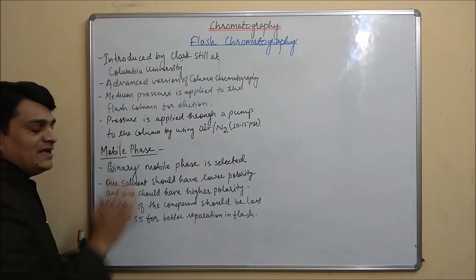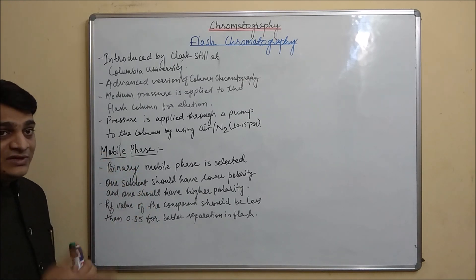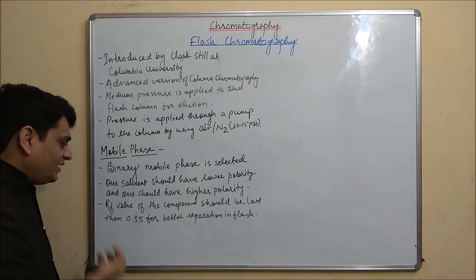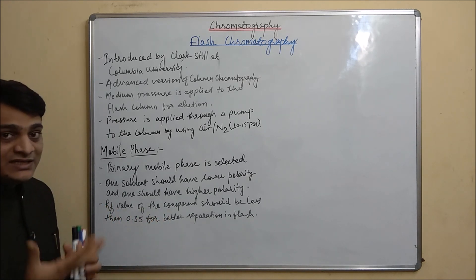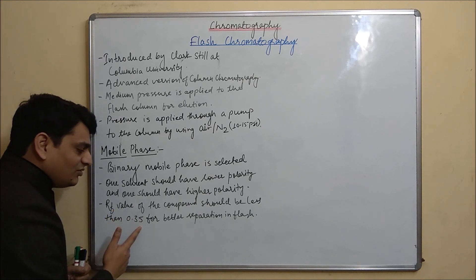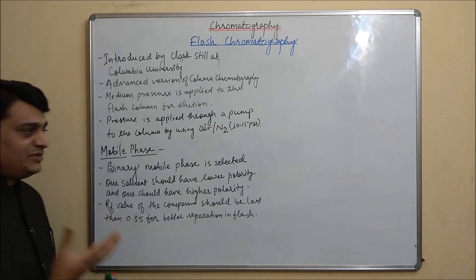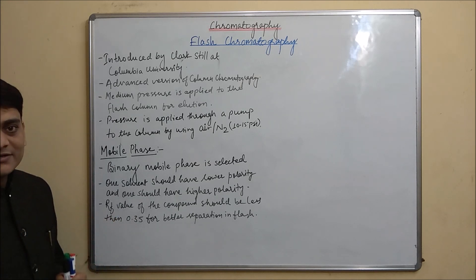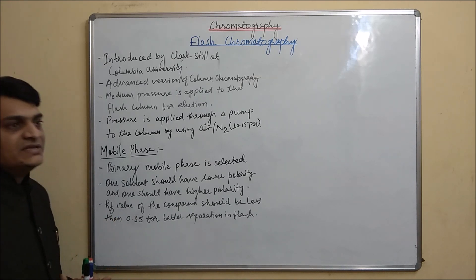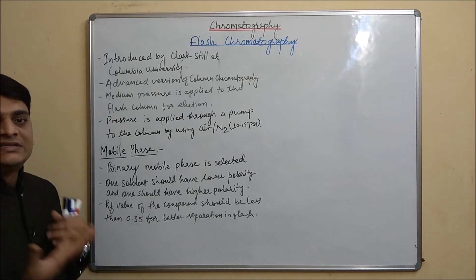For solvent system development in flash chromatography, first we optimize our solvent system in TLC such that our compounds get separated and the RF value is less than 0.35 for better separation and better output in flash chromatography. An RF value of 0.35 means the compound should have better affinity with the stationary phase.